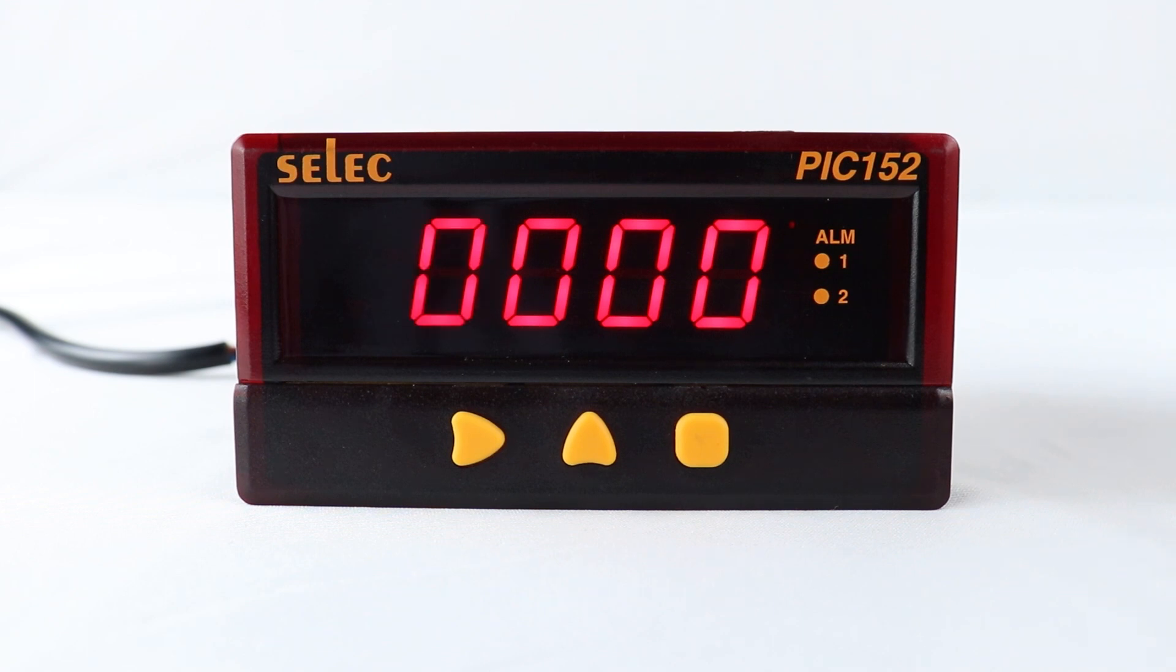To scale the controller, 2 scaling points are necessary. Each scaling point has a coordinate pair of display value and input value. Scaling point B at high and low end of the input signal measured. Process value will be linear over the entire input range.